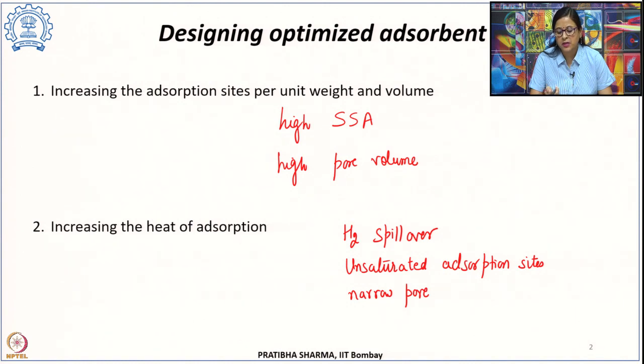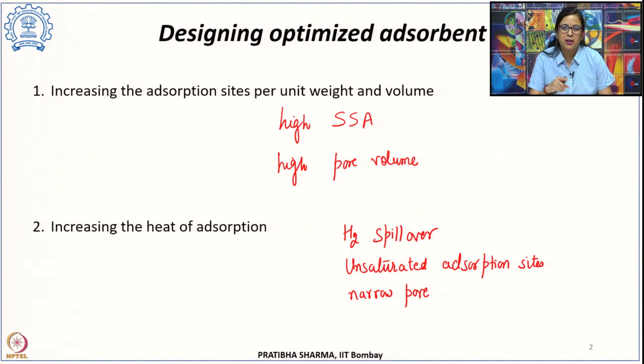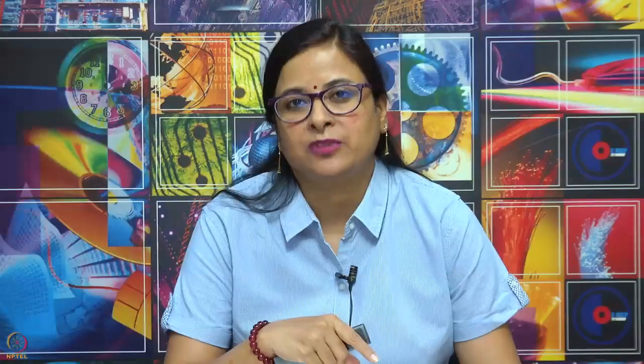Another choice could be adsorption of hydrogen into very small or very narrow sized pores. In that case the hydrogen molecule can interact with multiple pore walls, which helps in improving the adsorption potential. Now let us look at the different materials that can be used for adsorption of hydrogen and thereby for solid state hydrogen storage.